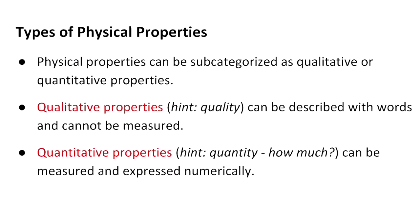There are two types of physical properties. The first are qualitative physical properties, which look at the quality of something. They describe matter using words that are not measurable — for example, describing something as looking clear, colorless, or having some kind of odor. These are all qualitative physical properties because they describe the quality of something.